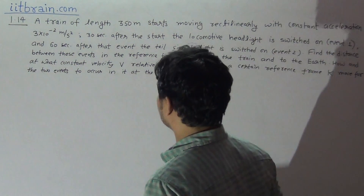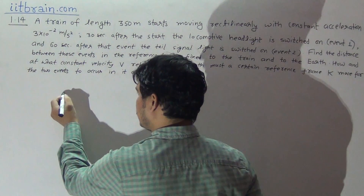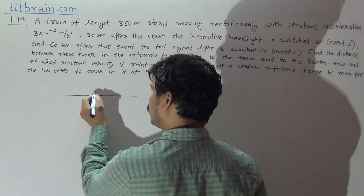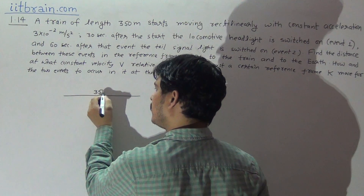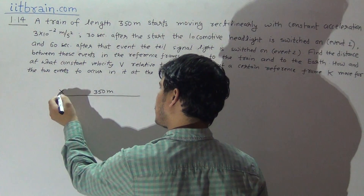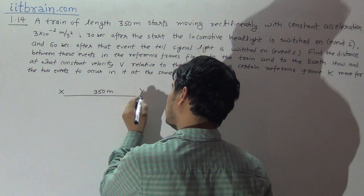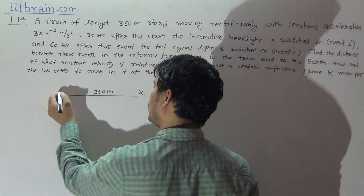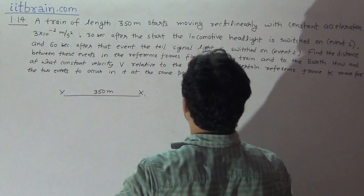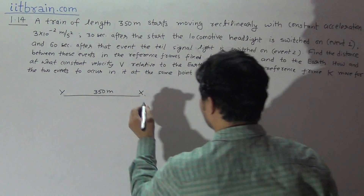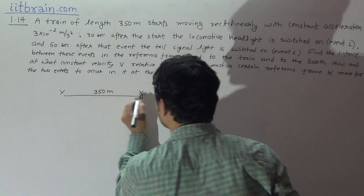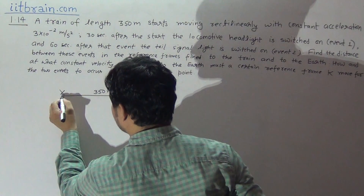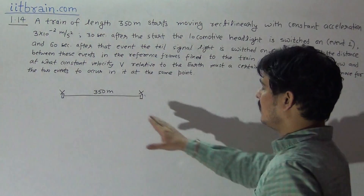Let's set up the diagram. This is the train; the total length of the train is 350 meters. Let this be X and this be Y. The front part of the train has the locomotive headlight, and this is the tail signal at the rear end.